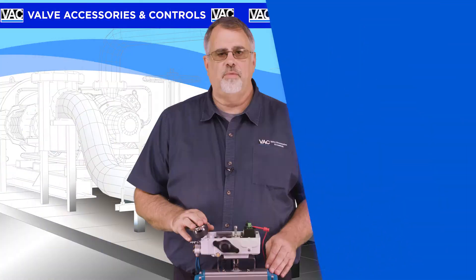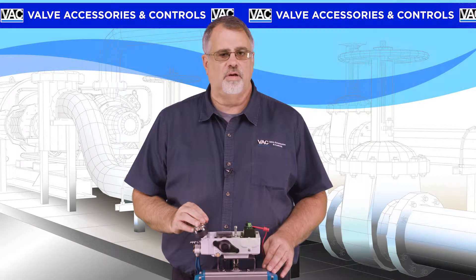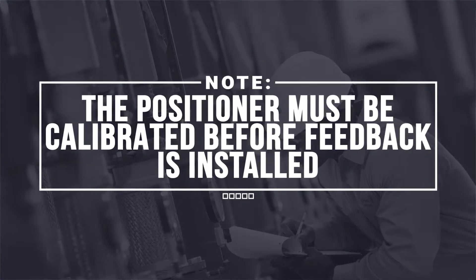4 to 20 milliamp loop-powered feedback can be installed at any time, even on a positioner already mounted on a valve in the field. Note, the positioner must be calibrated before feedback is installed.